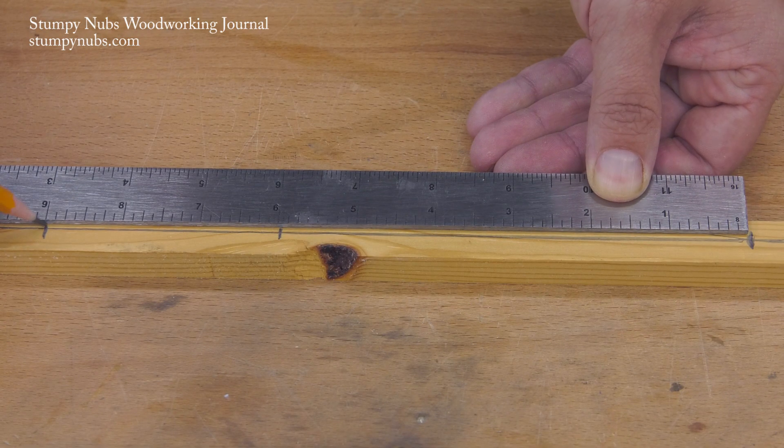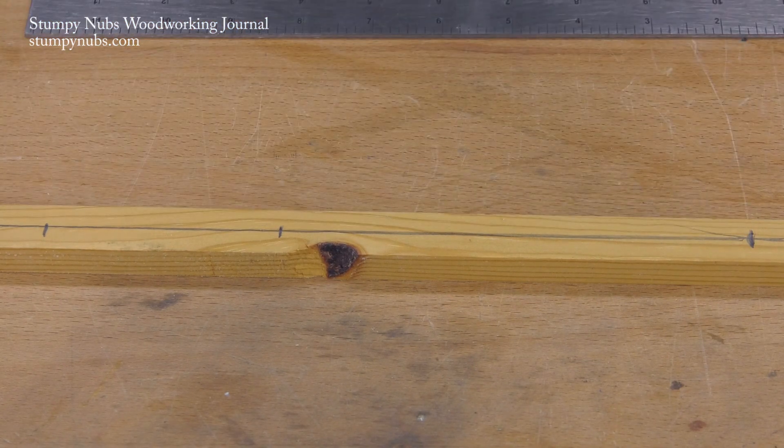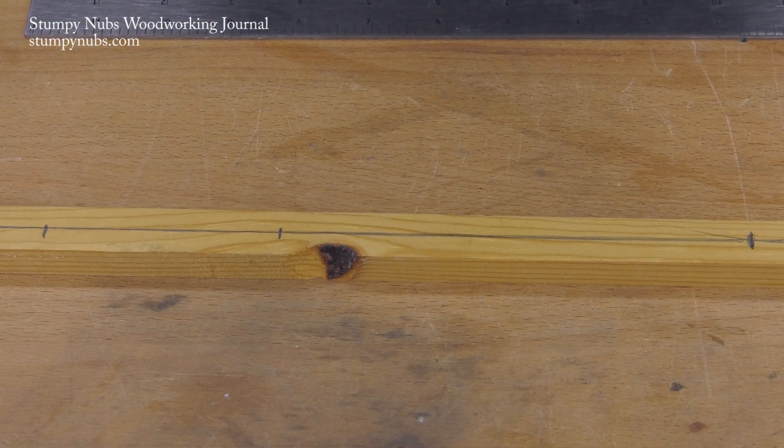And let's say I want the ellipse to be 18 inches wide. I'll measure half of that, which is nine inches, from my first mark. I'm left with three marks on my stick of wood.